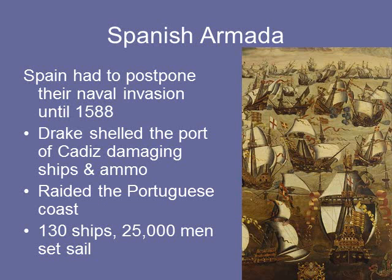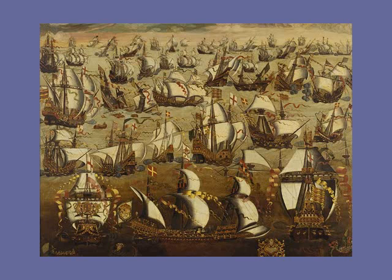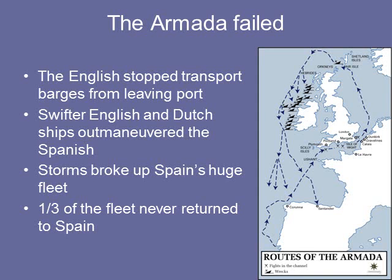Spain had to postpone their naval invasion until 1588. Drake shelled the port of Cadiz, damaging ships and ammunition, and raided the Portuguese coast. Just 130 ships and 25,000 men set sail toward England. The Armada failed: the English stopped transport barges from leaving port; English and Dutch ships, being much swifter, outmaneuvered the Spanish; and storms broke up Spain's huge, overcrowded fleet. A third of the fleet never returned to Spain — some went around Great Britain, with some ending up stuck in Ireland.